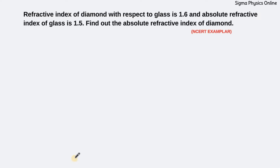Hello students, welcome back. Let's have a look at the next question. It's a question from refractive index and it reads: the refractive index of diamond with respect to glass is 1.6 and the absolute refractive index of glass is 1.5. Find out the absolute refractive index of diamond.